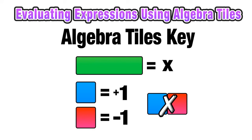So let's use this key to make sure that we're familiar with how to use algebra tiles. Remember that the green rectangle represents X, a blue square represents positive 1, a red square represents negative 1, and a combination of one blue and one red square, 1 plus negative 1 would equal 0, so they cancel each other out.